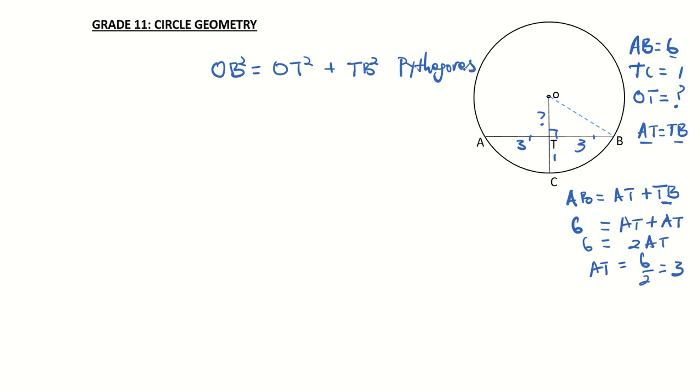What values do we have? TB is 3, so that's the square of 3. OT is unknown, and OB is R because it runs from the center to the circumference, so it's the radius. That means OT squared is equal to R squared minus 3 squared.